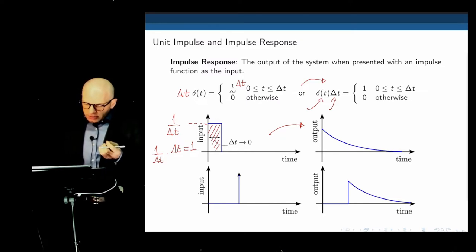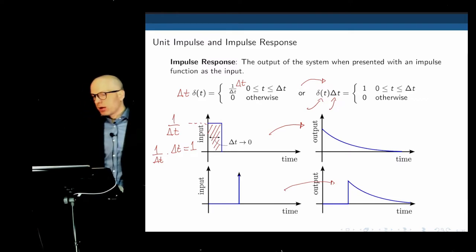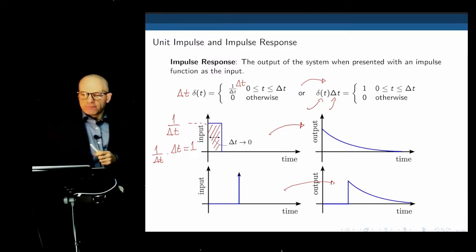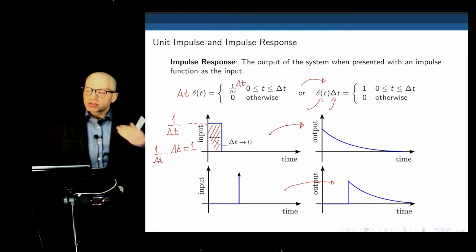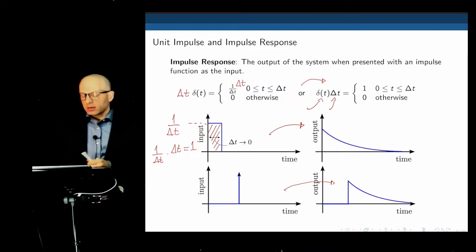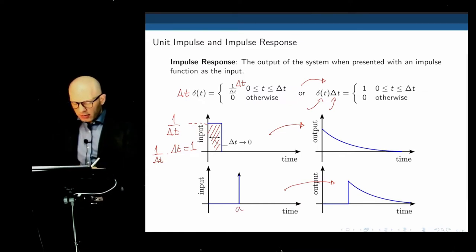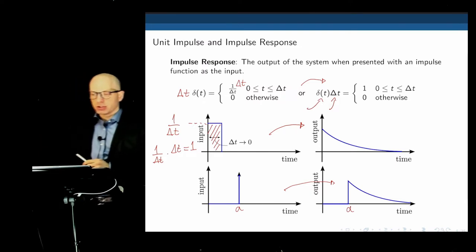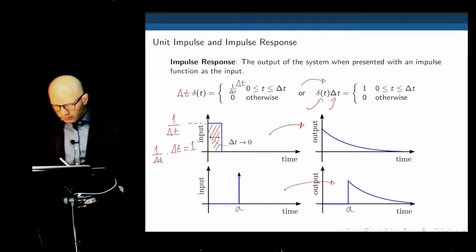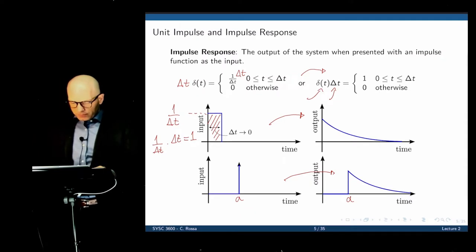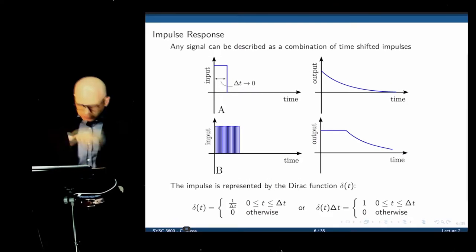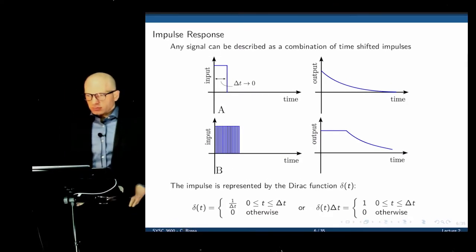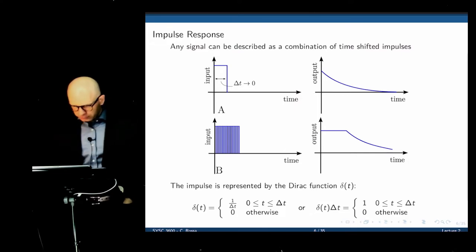Provided now that the system is linear and time invariant, if we apply this delta function later in time, nothing will change. The impulse response remains exactly the same, but it will start the same amount of time later. So if this is applied at time a, then the impulse response starts at a and then decays. Any questions here?